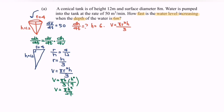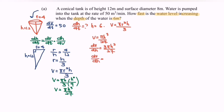Next, differentiate V = πh³/27 with respect to h. We get dV/dh = 3πh² / 27, which simplifies to dV/dh = πh² / 9.